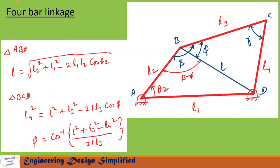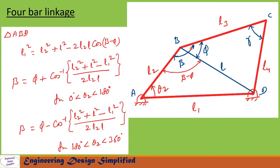The angle between these two lines is beta, and the angle between the other two lines is beta minus phi. Applying the cosine rule for triangle ABD to find beta: l1 squared equals l2 squared plus l squared minus 2·l2·l·cos(beta minus phi). So beta equals phi plus cos inverse of (l2 squared plus l squared minus l1 squared) divided by (2·l2·l). This equation is true for theta 2 between 0 and 180 degrees. For theta 2 greater than 180 and less than 360 degrees, beta equals phi minus cos inverse of (l2 squared plus l squared minus l1 squared) divided by (2·l2·l).